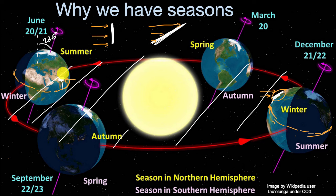There are also effects on the amount of daylight you get. For example, in the summer when the northern hemisphere is most tilted towards the sun, the North Pole has constant daylight and the South Pole has constant nighttime. The opposite happens when the northern hemisphere is pointed away from the sun.